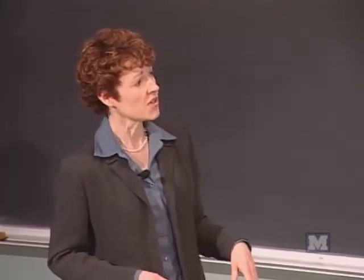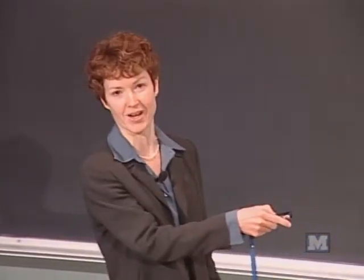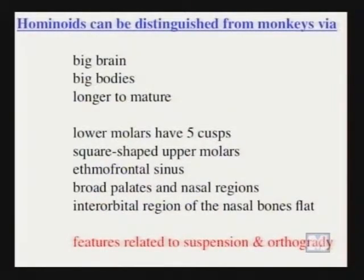It turns out for hominoids, what's really distinctive is actually below the neck. The features that really distinguish hominoids, at least in terms of the skeletal system, are related to their locomotion, because apes do some really different things in terms of locomotion. Apes are upright much of the time — humans of course are upright all the time. But taxa like gibbons and orangutans, when they're climbing in trees, their torsos are upright. The term we use to describe having an upright torso is orthogrady.